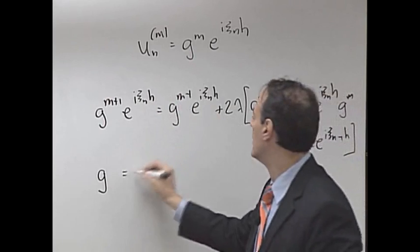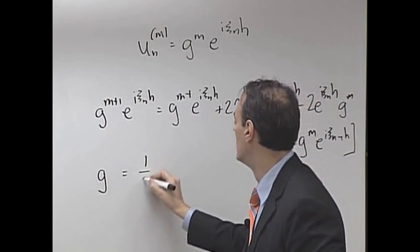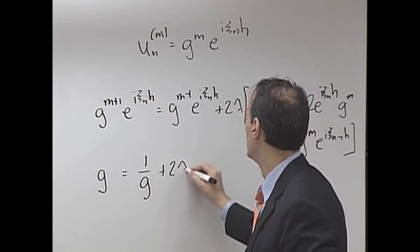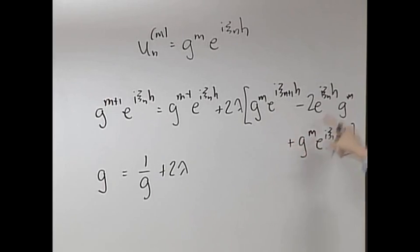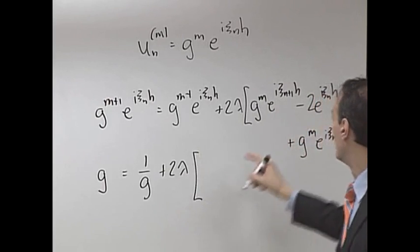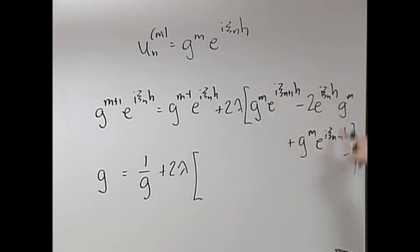Kills that one. Kills that one. All these g of m's go away. What's left over is now, oh, by the way, we killed that one because we multiply by e to the negative i c of mh. So there's a minus 2 over here.